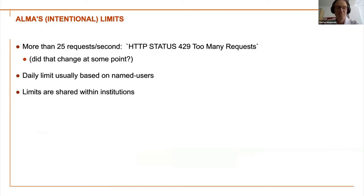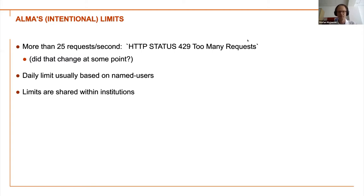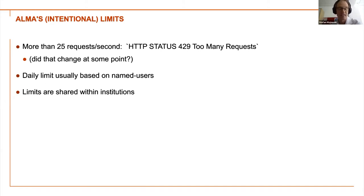The API, like any system, has some limits — most of them are intentional. One very intentional limit is that you have 25 requests per second — that is not just a limit but also a challenge. If you exceed it you get HTTP status 429 Too Many Requests. Yesterday I was wondering if that had changed because ALMA was just dropping connections after a lengthy period, but I think that was just a Sunday issue. As with any system, error handling and taking into consideration that different things might happen at different times are also important.